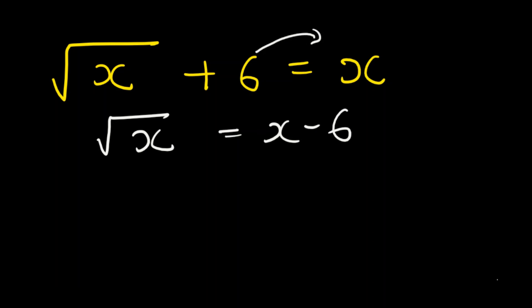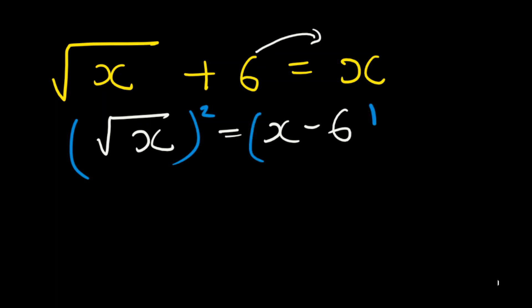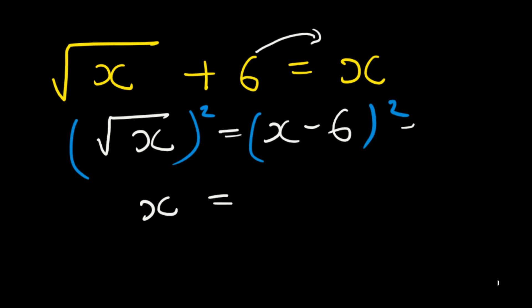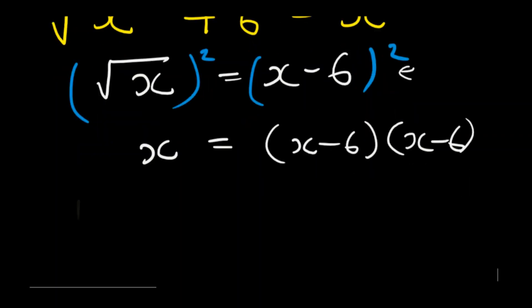From here, now you can square both sides to remove the square root. Squaring both sides gives x equals (x minus 6)(x minus 6). We then find the product of this expansion.